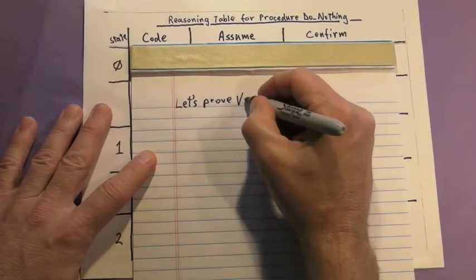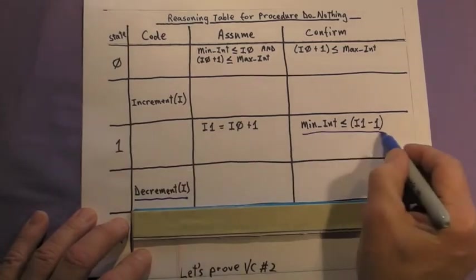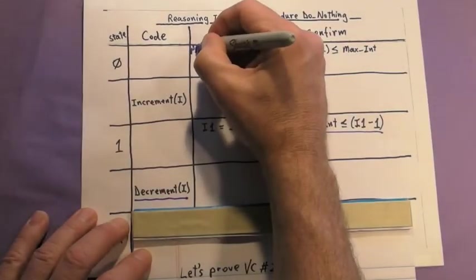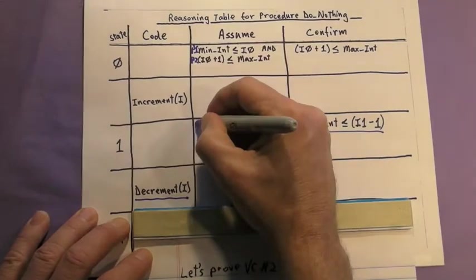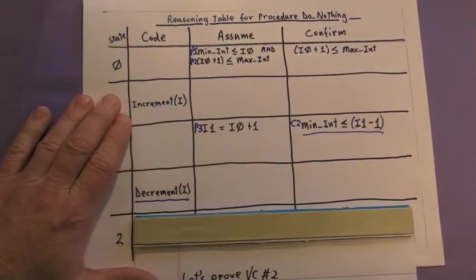Let's move on to proving VC number 2. For VC number 2, we have to show that it's okay to call decrement. We'll use premises P1, P2, and P3 to show decrement's precondition holds, and we'll label it C2.